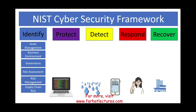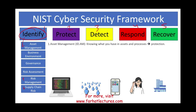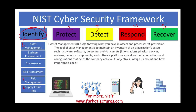Today we're focusing specifically on the identify function. Under identify, the first category is asset management — abbreviated ID.AM. The idea is: do we know what assets and processes need protection? The goal is to maintain an inventory of the organization's assets, including hardware, software, people, data, information, physical devices, systems, networks, components, software platforms, and so on. Personnel are part of your assets as well.